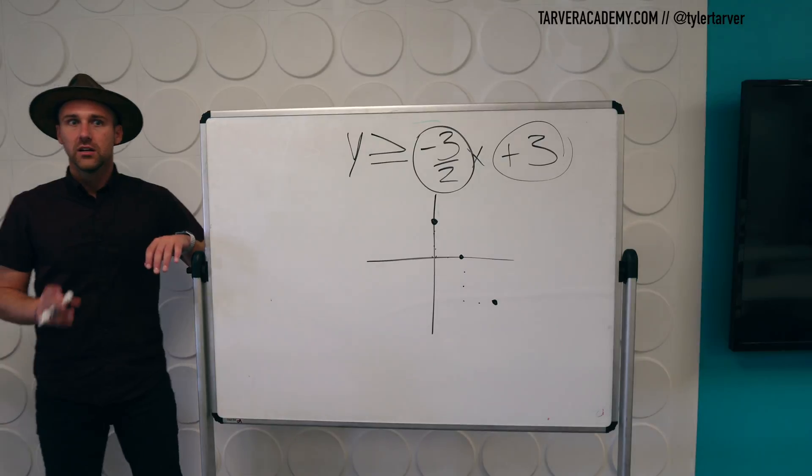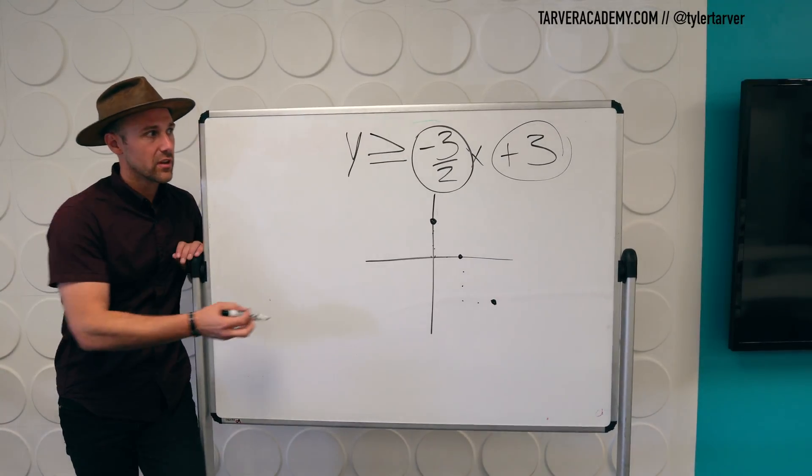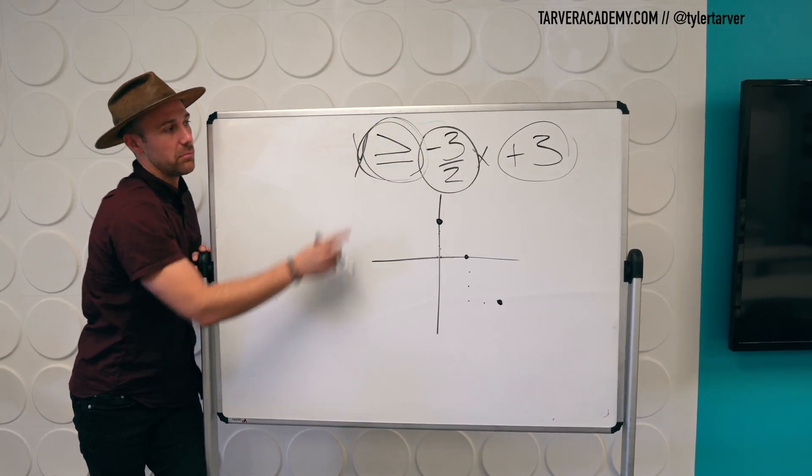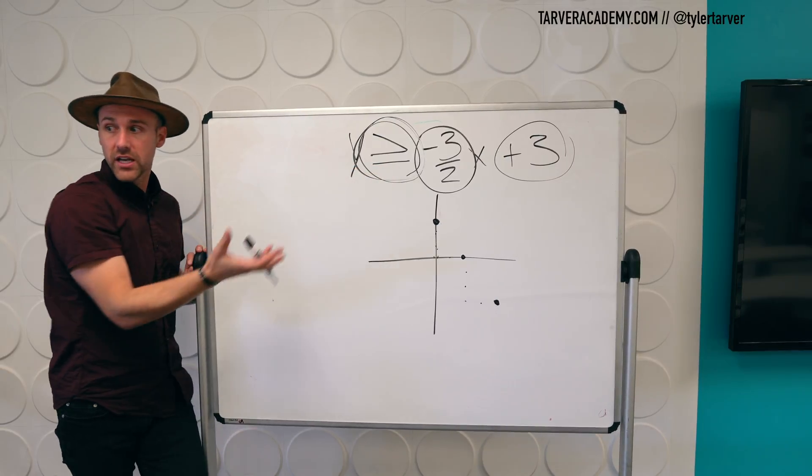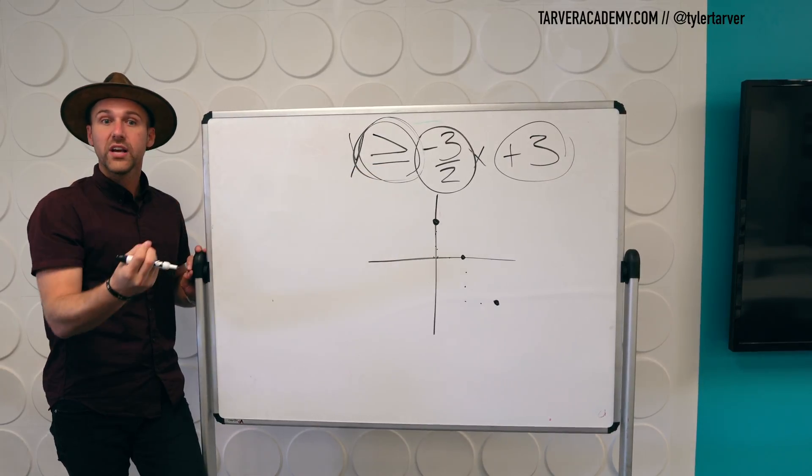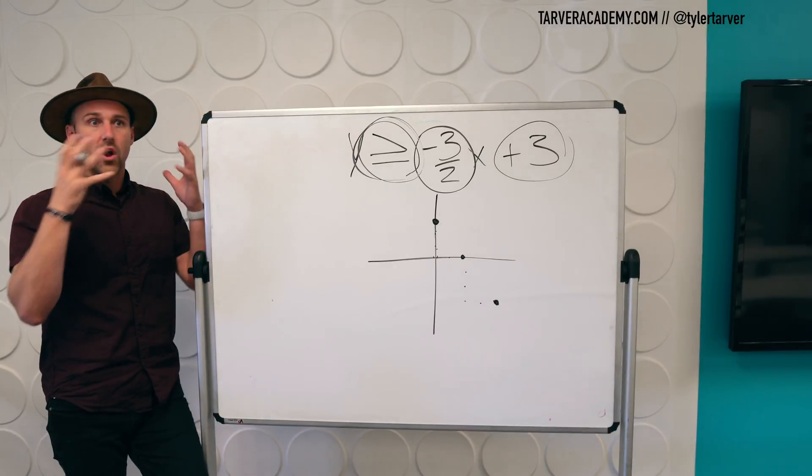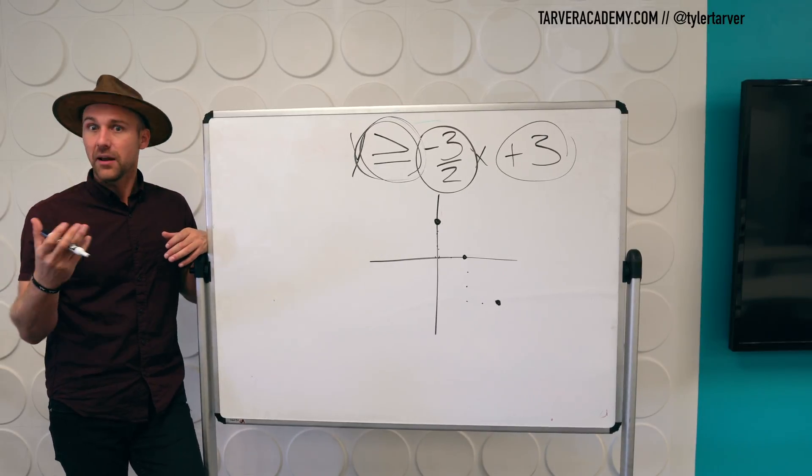Now we need to know dashed or solid. Solid. Solid. Solid. Because it can be equal to. It's greater than or equal to, which means our realm of points this can be, can be on the line.